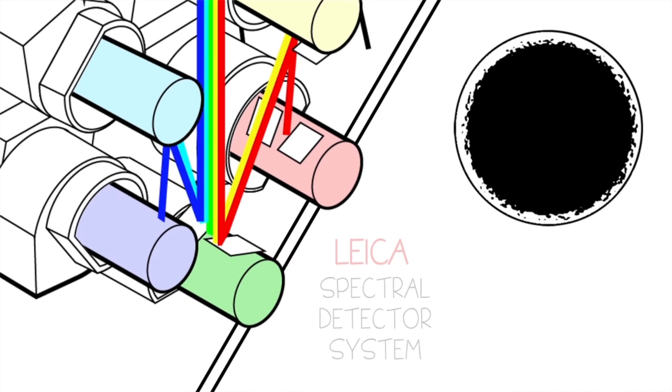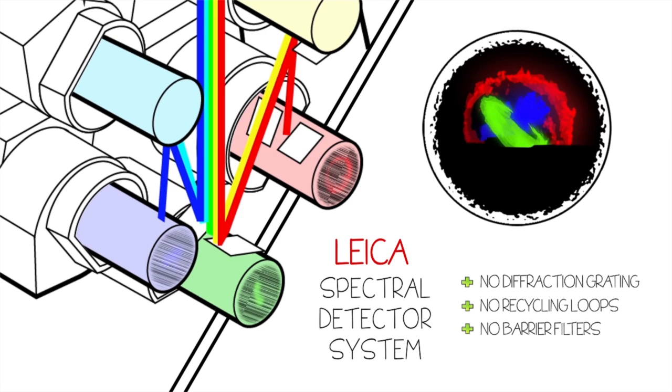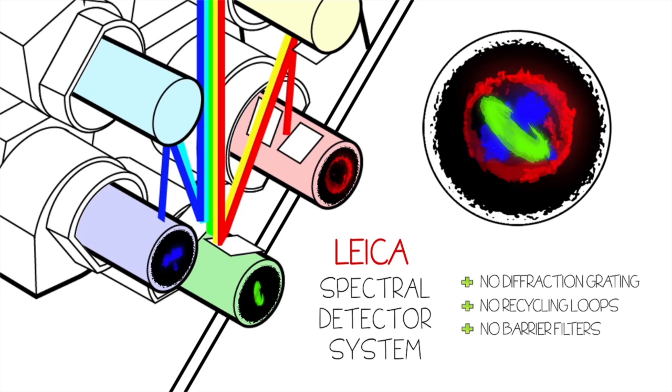Leica's elegant prism-based spectral detection system uses no diffraction grating, recycling loops, or barrier filters to provide the highest transmission for optimized detection of your valuable samples emissions.